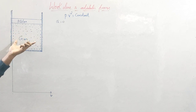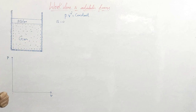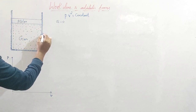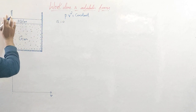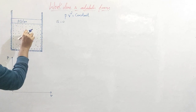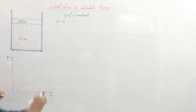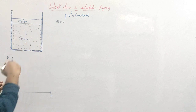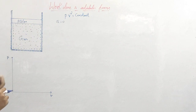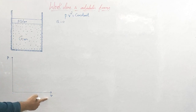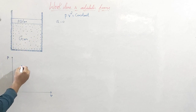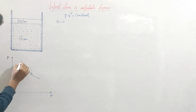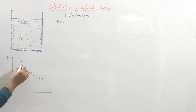We are going to derive the expression for work done by the gas. For the adiabatic process, the system should be thermally insulated — we have to provide insulation so that there is no heat interaction between the gas inside and the outside. Now I will draw the work done by this gas on a PV diagram. This is the pressure-volume graph, and this is the adiabatic process curve going from state one to state two.